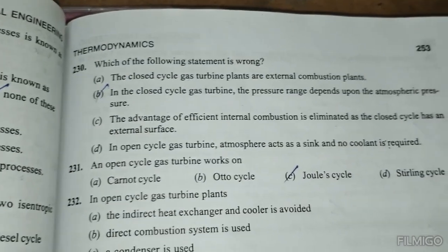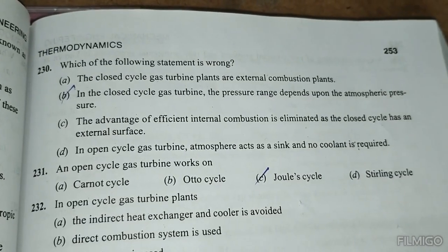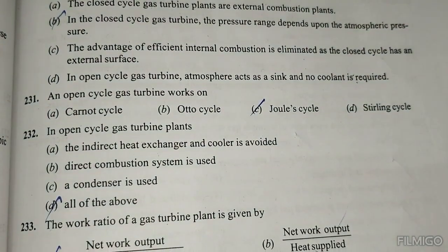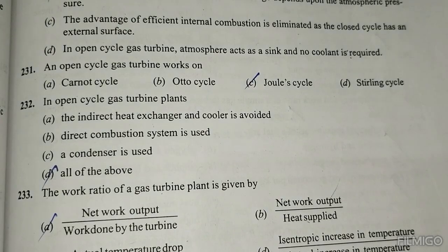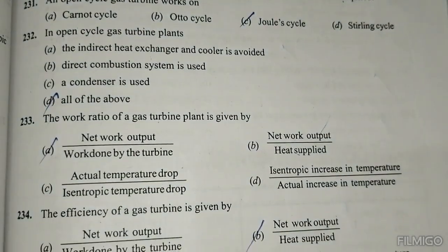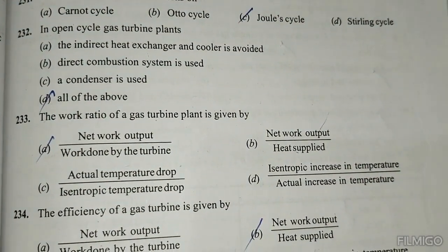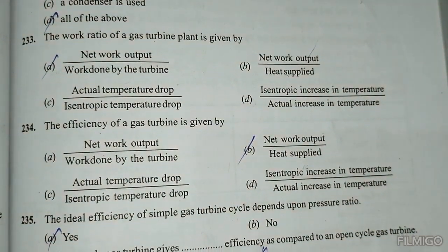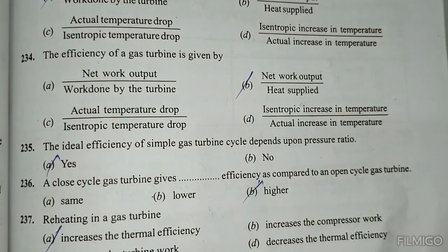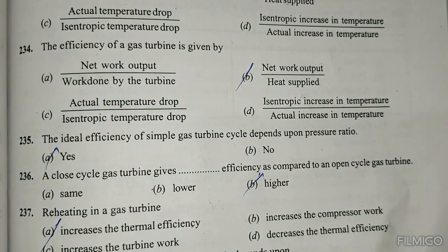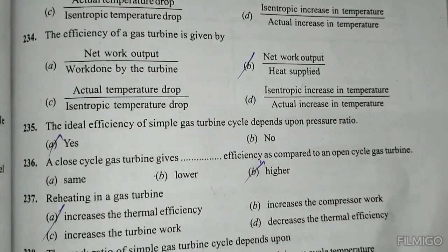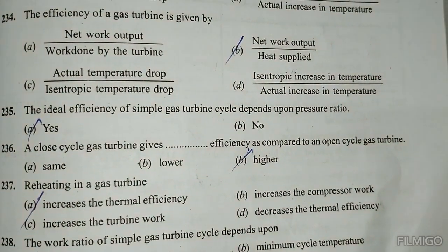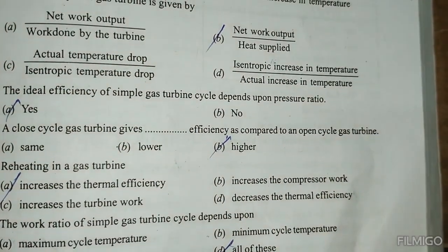In a closed cycle gas turbine, the pressure range depends upon the inlet pressure. An open cycle gas turbine works on the Joule cycle. An open cycle gas turbine plant uses air. The work ratio of a gas turbine plant is given by net work output divided by work done by the turbine. The efficiency of a gas turbine is given by net work output divided by heat supply. The ideal efficiency of a simple gas turbine cycle depends upon pressure ratio. A closed cycle gas turbine gives higher efficiency compared to an open cycle.